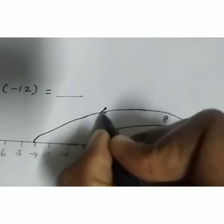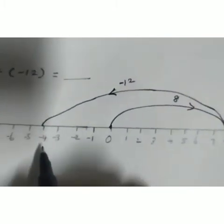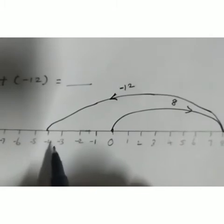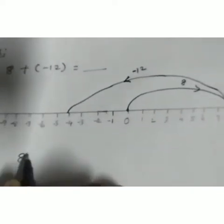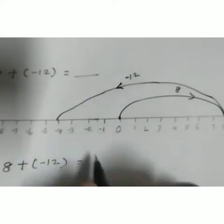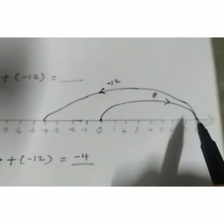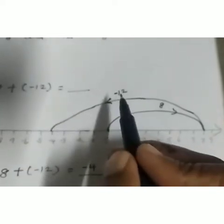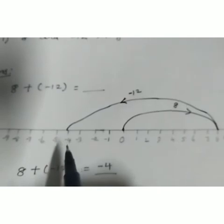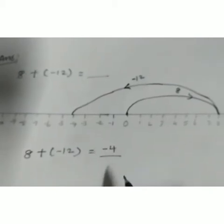After moving 12 steps backward, we reach minus 4. So 8 plus minus 12 equals minus 4. To summarize: we start at 0, move 8 steps forward, then move 12 steps backward — because minus 12 is a negative integer, we move in the negative direction, backward. So 8 plus minus 12 equals minus 4.